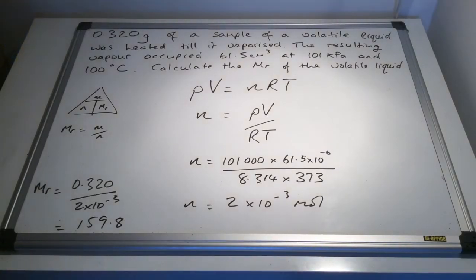So you can see in the left-hand corner there, we've got the MR coming out as 159.8, and that's because we've divided the mass, the 0.320 grams, by the number of moles, 2 times 10 to the minus 3, and it rounds to that, to one decimal place.